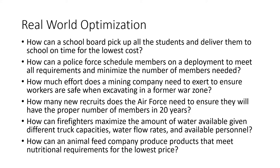How can an animal feed company produce products that meet nutritional requirements for the lowest price? You can mix different types of basic feeds to give cows, horses, or whatever the animal is what they need. They need a certain amount of protein, fat, different nutrients, and different vitamins. How can you combine different products with different mixtures to give the animal what it needs, but keep the cost as low as possible, since these base products all have different prices? These are just some real-world examples of optimization where these techniques have been applied successfully to maximize the use of your resources.